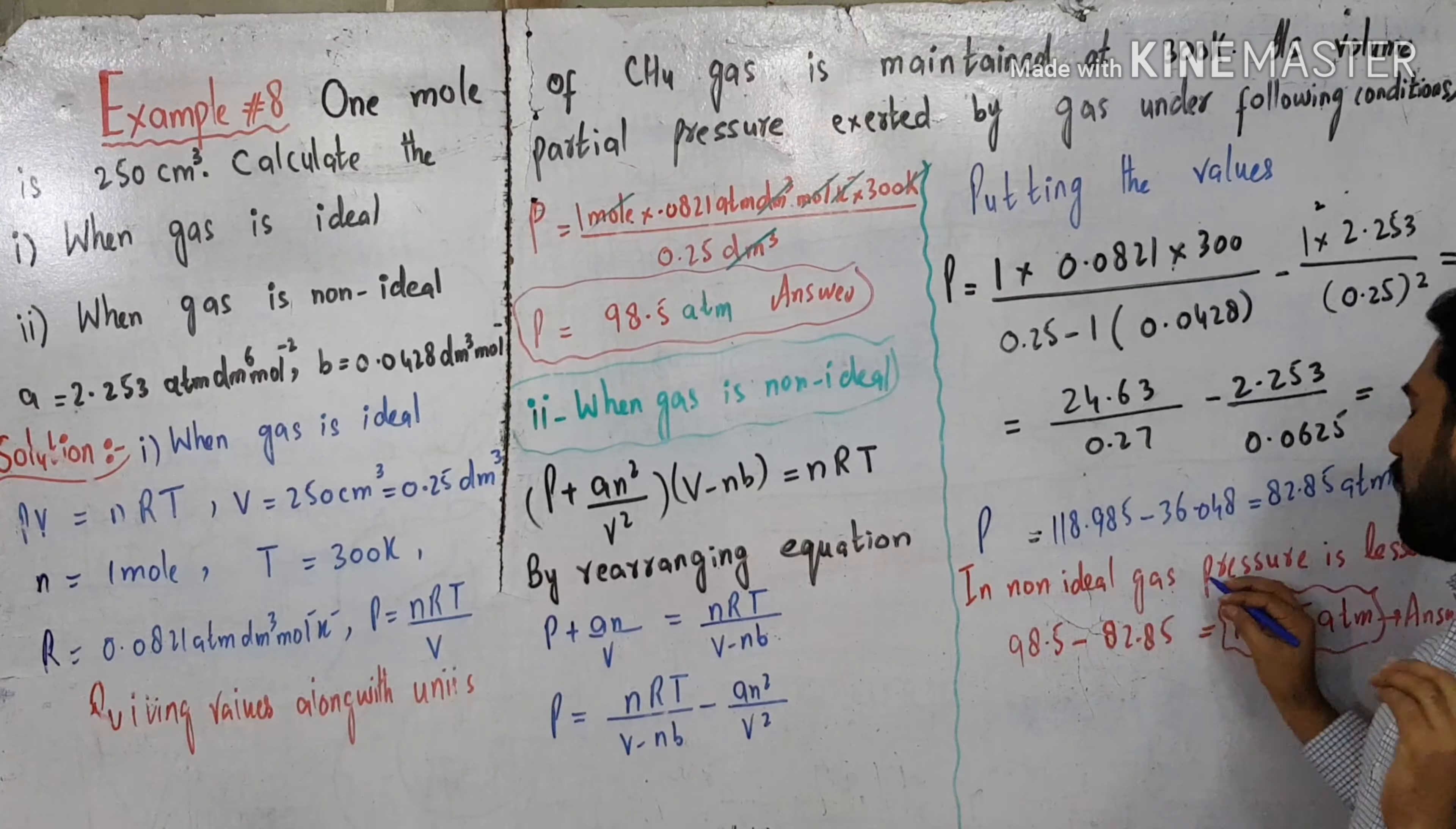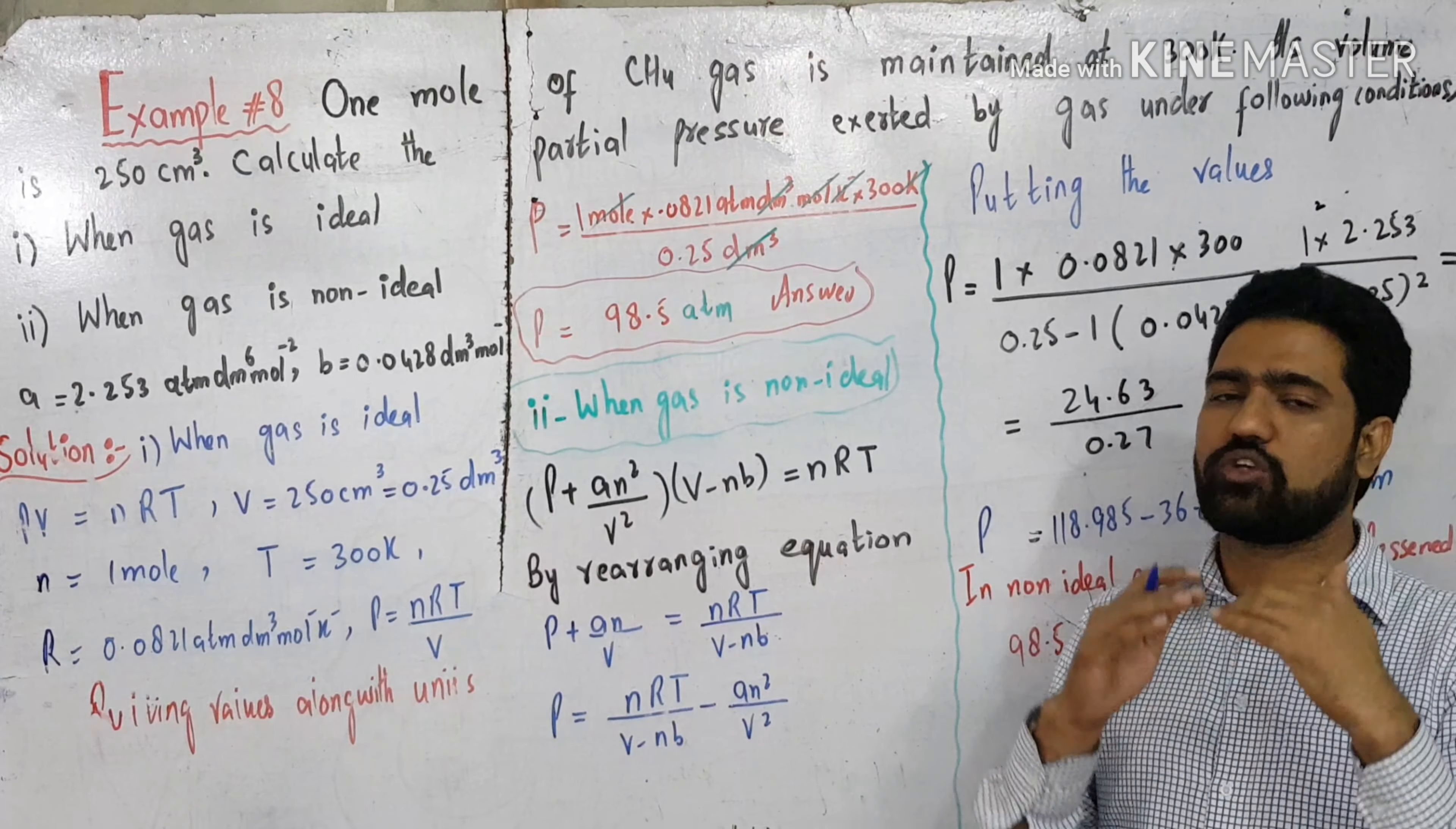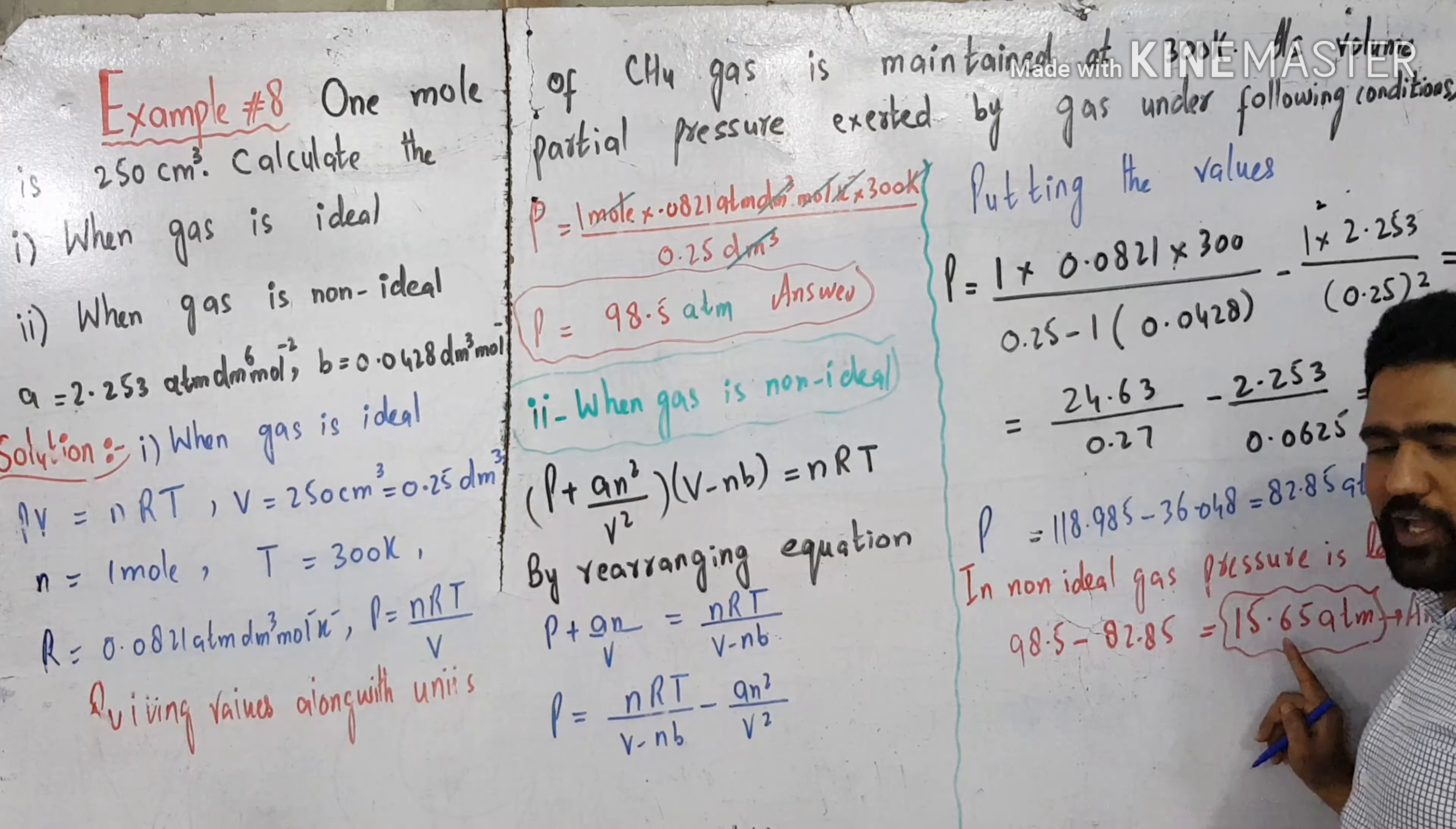In non-ideal gas, pressure is lessened. Why? In ideal gas, according to kinetic molecular theory, particles exert pressure. Non-ideal gas has intermolecular forces, so pressure is lessened. Ideal gas was 98.5, non-ideal is 82.85. The difference is 15.65.